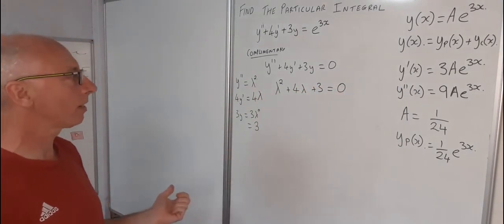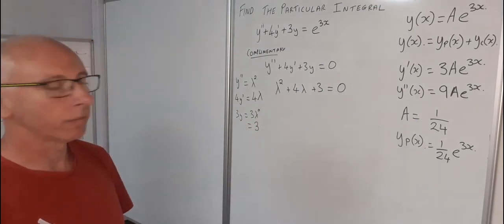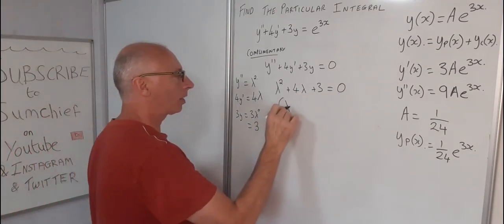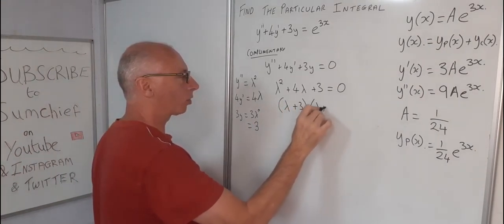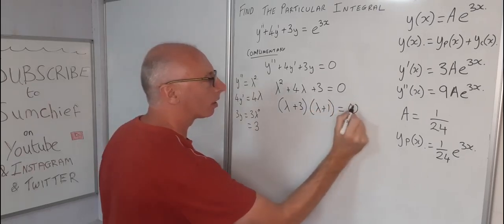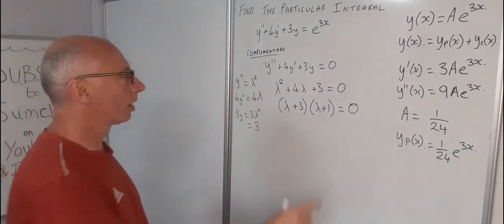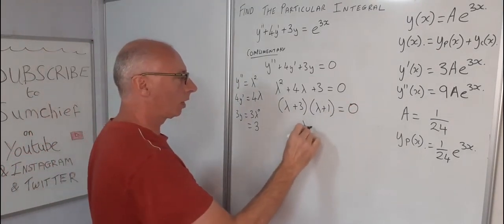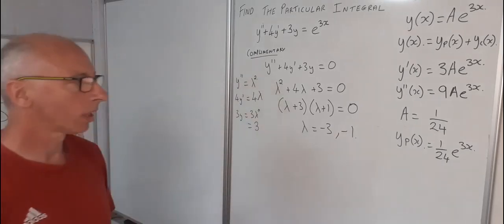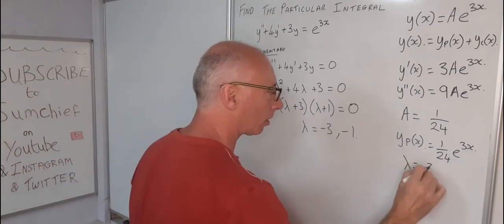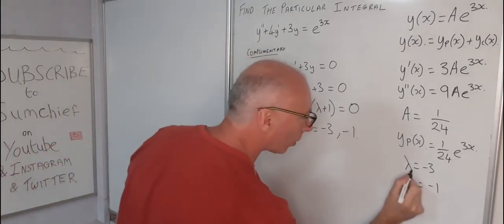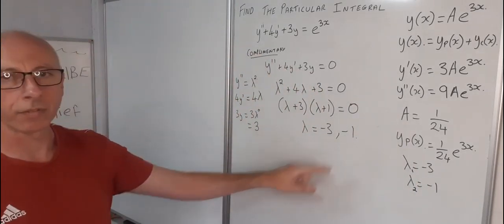We have a quadratic equation: lambda squared + 4·lambda + 3 = 0. We can factor that, since we have 3 and 4, into (lambda + 3)(lambda + 1) = 0. So lambda equals minus 3 or lambda equals minus 1. We label these lambda subscript 1 and lambda subscript 2 — our two different values.